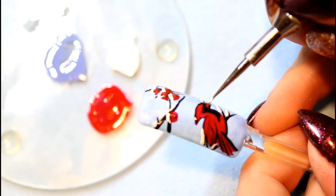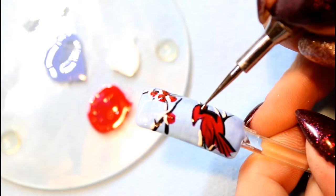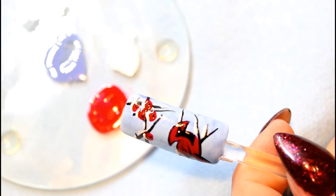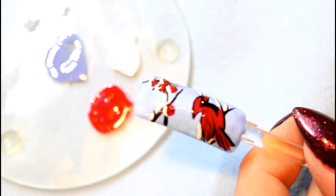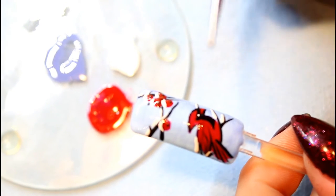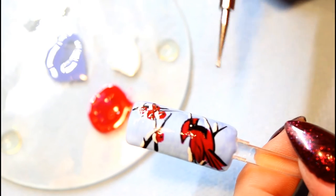Using your dotting tool, paint an eye on your cardinal. Then continue with randomly placed dots for snow.